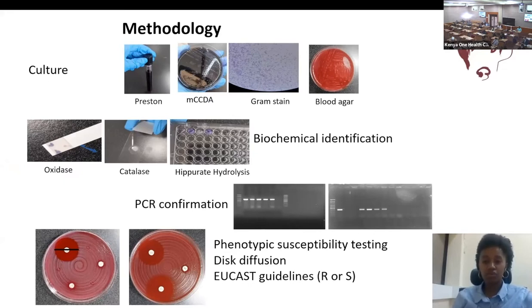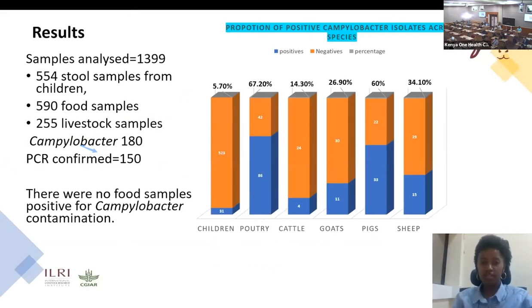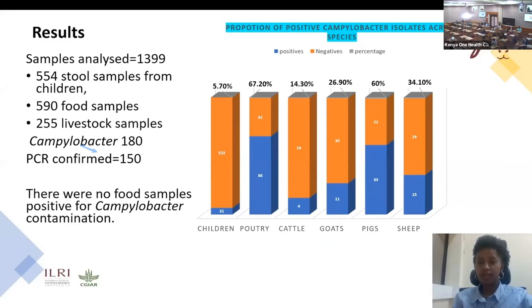We analyzed a total of 1399 samples, of which 554 were stool samples from children, 590 were food samples and 255 were livestock samples. Among these we were able to isolate and confirm using PCR 150 Campylobacter species. Here is a diagrammatic representation of the positive Campylobacter isolates across species.